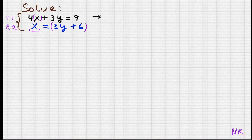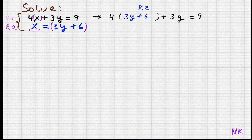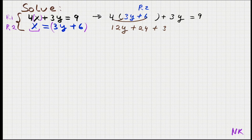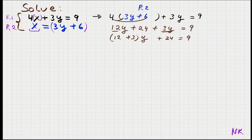Row 1 had 4x plus 3y equals 9, and x equals 3y plus 6 from row 2. This substitution creates a new equation with just one variable. We have a parenthesis we cannot simplify inside, so let's distribute the 4: 4 times 3y gives 12y, 4 times 6 gives plus 24, and we have plus 3y from before, equals 9. We have like terms of y: 12 plus 3 gives 15y plus 24 equals 9.